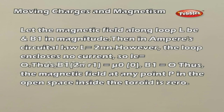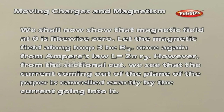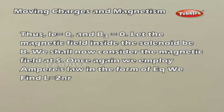However, the loop encloses no current, so IE equals zero. Thus, B₁ × 2πR₁ equals μ₀ × 0, giving B₁ equals zero. Thus, the magnetic field at any point P in the open space inside the toroid is zero. We shall now show the magnetic field at Q is likewise zero. Let the magnetic field along loop 3 be B₃. For Ampere's law, L equals 2πR₃. However, from the sectional cut, the current coming out of the plane of the paper is cancelled exactly by the current going into it. Thus, IE equals zero and B₃ equals zero.